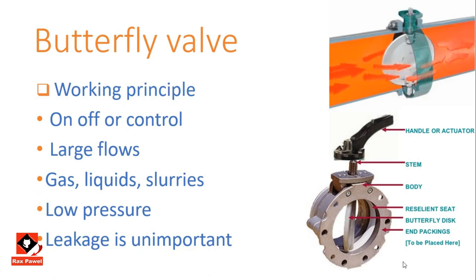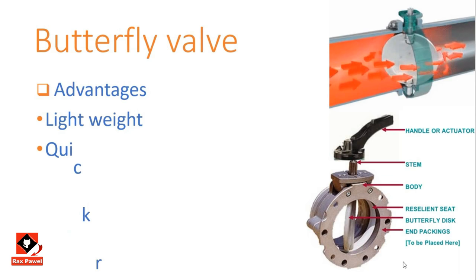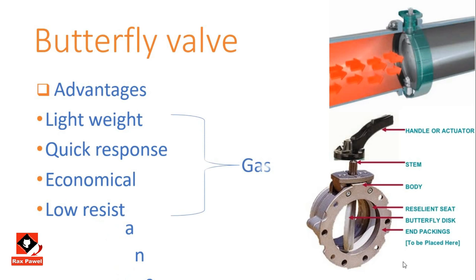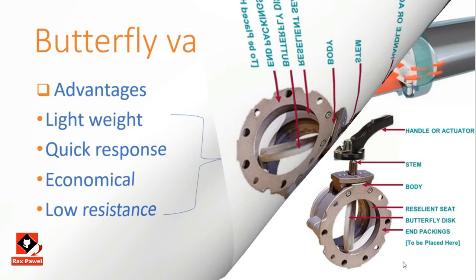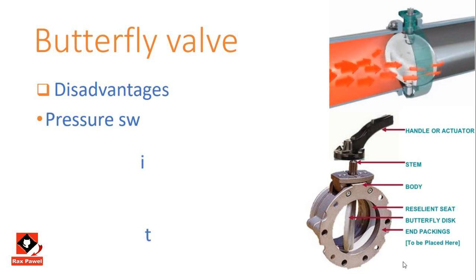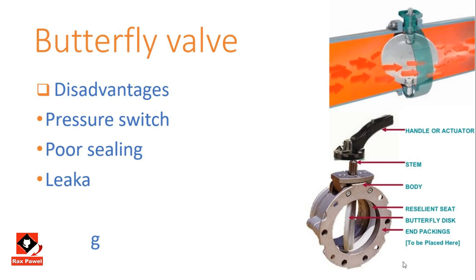Advantages of the butterfly valve: it is commonly used for controlling purposes, gives light weight with quick response time, is economical, and provides low resistance to flow. Disadvantages: it always leads to a pressure drop because the disc is always present in the flow path, and the valve does not provide a good seal, so leakages may occur.